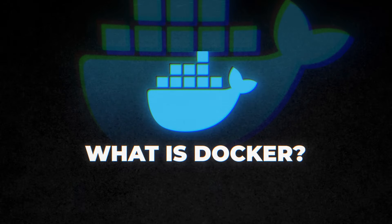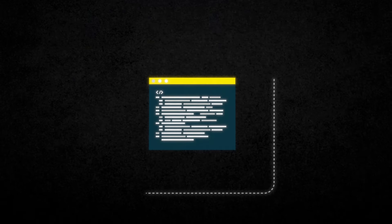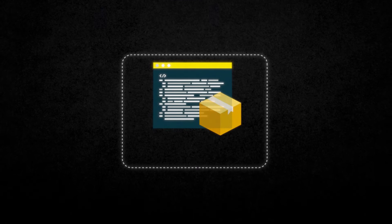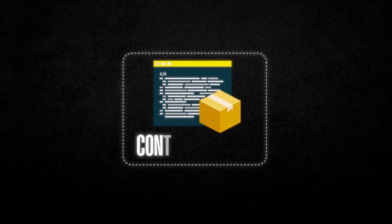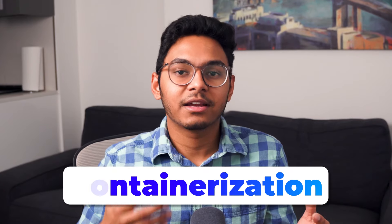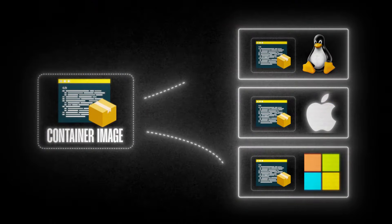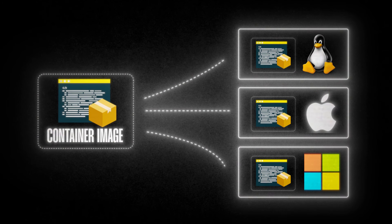So what exactly is Docker? Docker is a tool that is used to package applications along with all of their dependencies into a single unit called a container image. This process is called containerization, and the container image produced is basically a snapshot of the app along with all of its dependencies. We can use the container image of our app to run instances, also known as containers, of our application on pretty much any machine running any operating system. Container images are immutable, which means every container run from the same image will run identically.